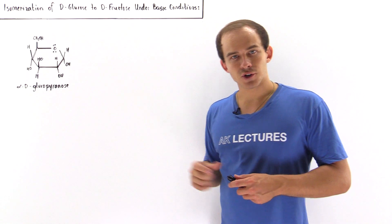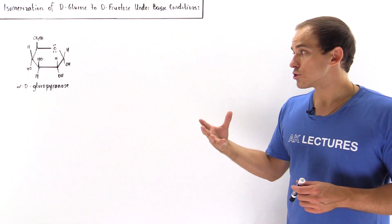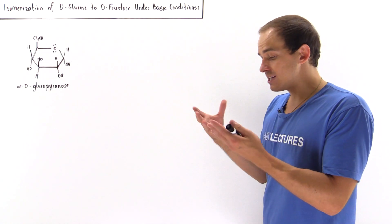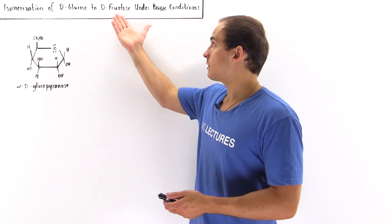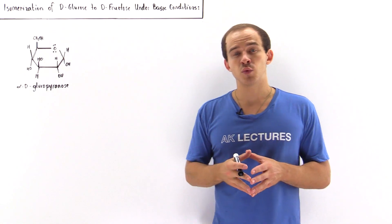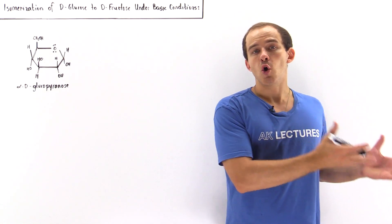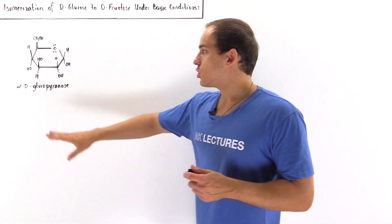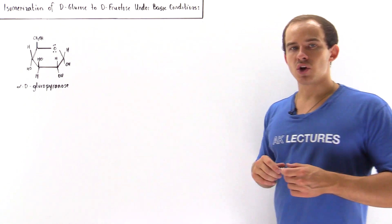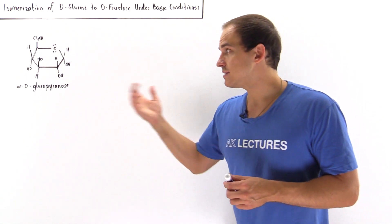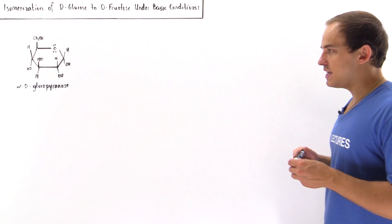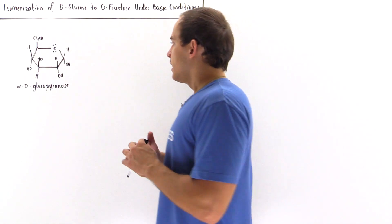Let's begin with the cyclic version, the version that predominates at equilibrium. Remember, any carbohydrate — in particular our glucose molecule — exists in equilibrium between the cyclic and the open-chain version. We begin with alpha-D-glucopyranose. We could have also used beta-D-glucopyranose; the end result would be exactly the same.